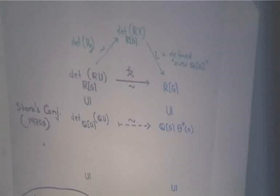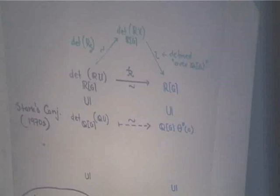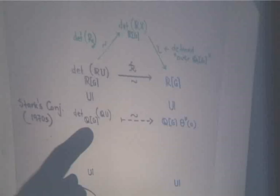If we assume Stark's conjecture, we can go further. Inside Q[G]·θ* there is a natural Z[G] free rank-one module — the one generated over Z[G] by θ*(0). The big question is: what is the pre-image via the regulator map of this Z[G]·θ* inside the determinant over R[G] of RU? If Stark is correct, this pre-image should be a free rank-one Z[G]-submodule, and we denote it by L.